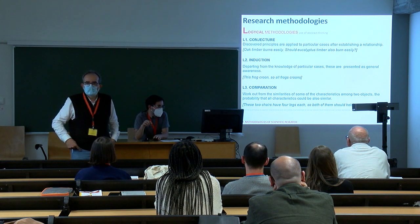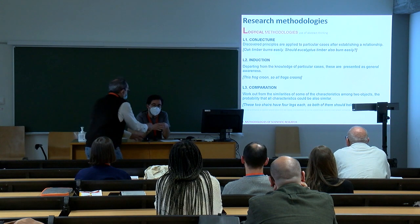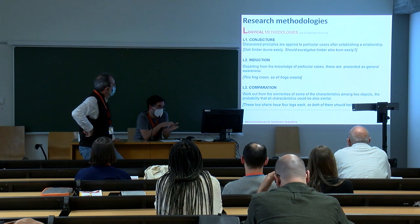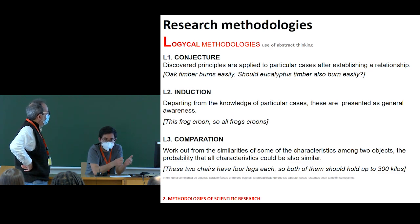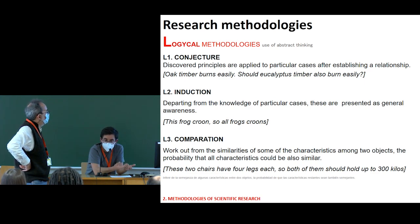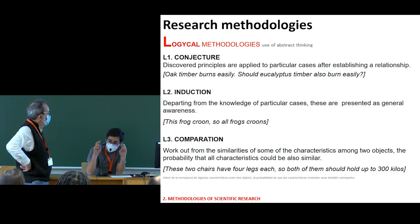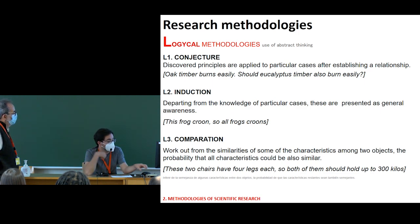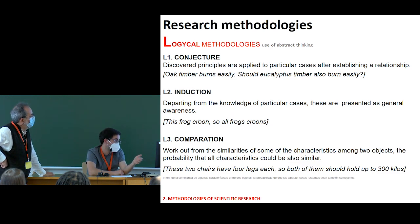One thing in order to better understand the relation with formal methods is that normally students look for, at least in first and second year, the direct process to meet the task. The subject looks forward to teaching how to think, how to analyze, how to create or generate proper analysis. It's like we are teaching to know how to program algorithms to analyze architecture and urbanism, but we do not enter into how to program. This is related to logical methodologies, which are conjectured — discovered principles are applied to particular cases after establishing a relationship.